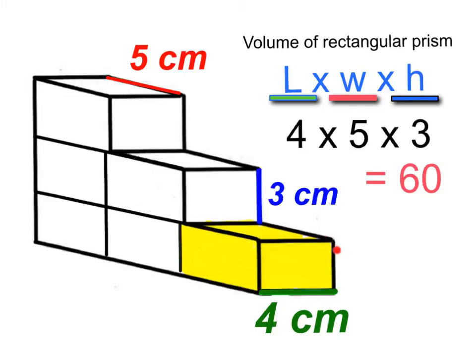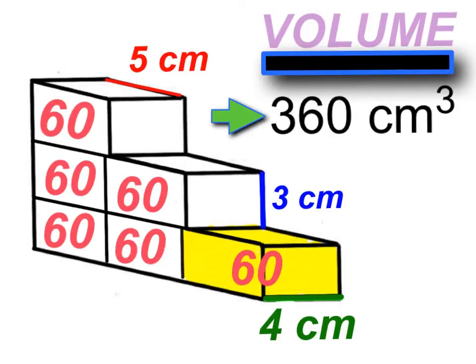These are my values. So 4 times 5 times 3 is going to give us 60. Now 60 centimeters cubed is the volume of one of these rectangular prisms. But notice that there are six identical rectangular prisms. So then what I have to do next is multiply that by 6. And 60 times 6 gives us 360 centimeters cubed.